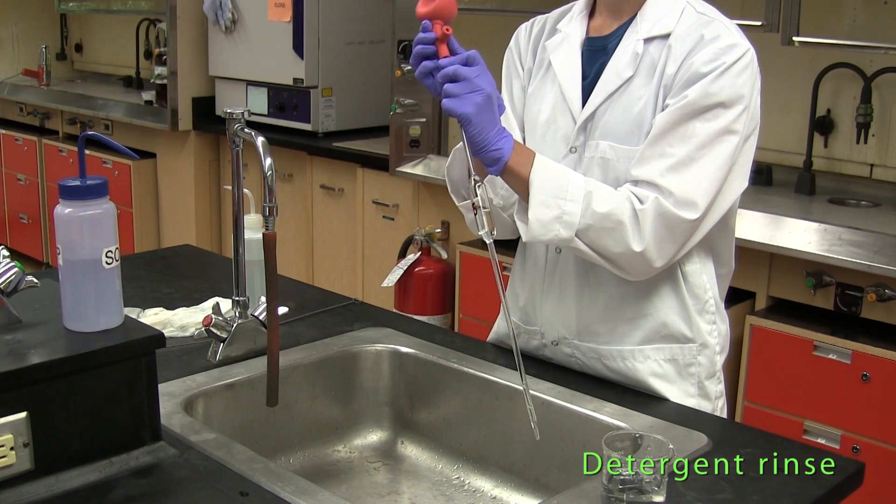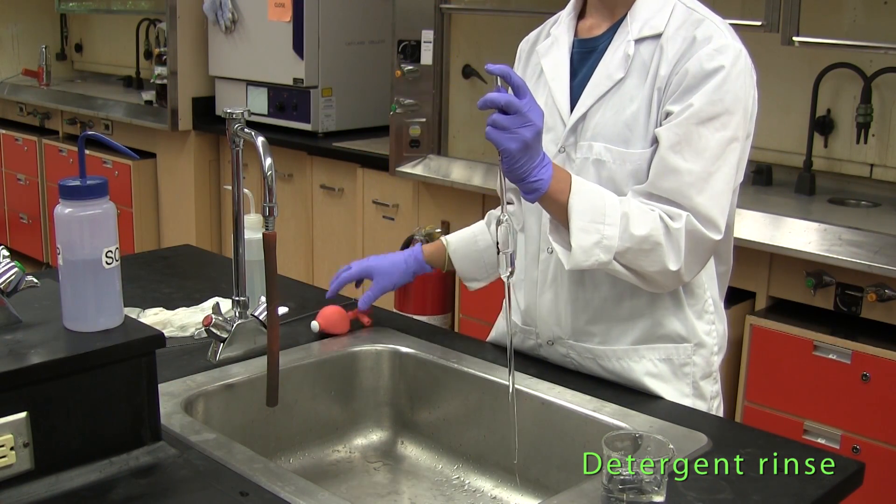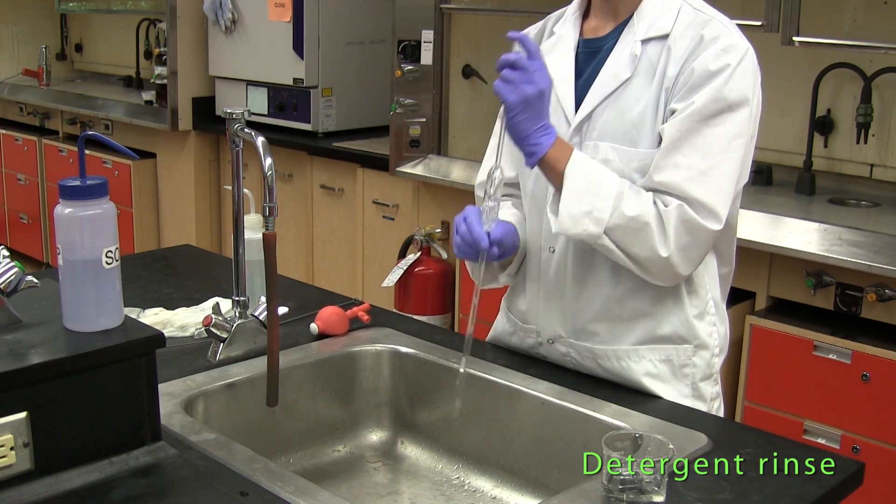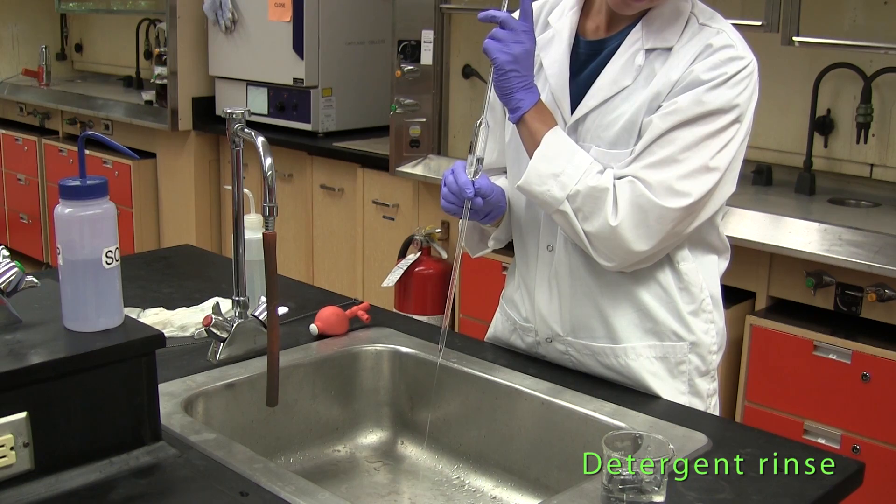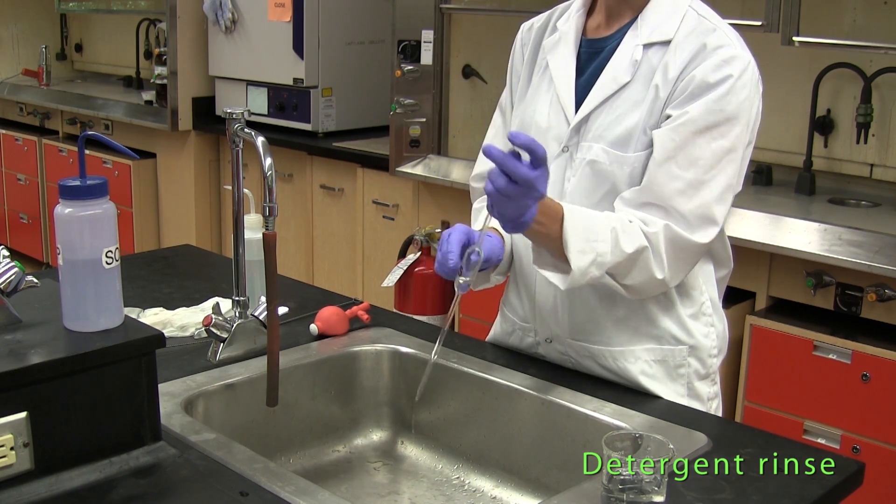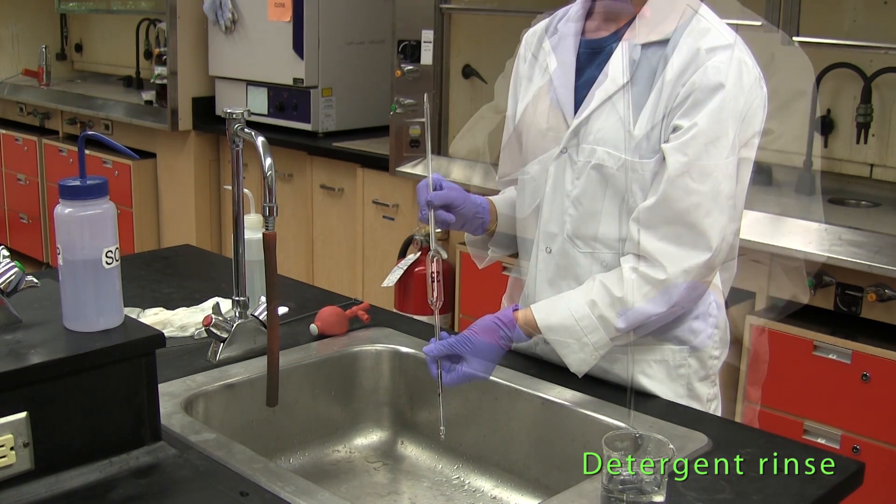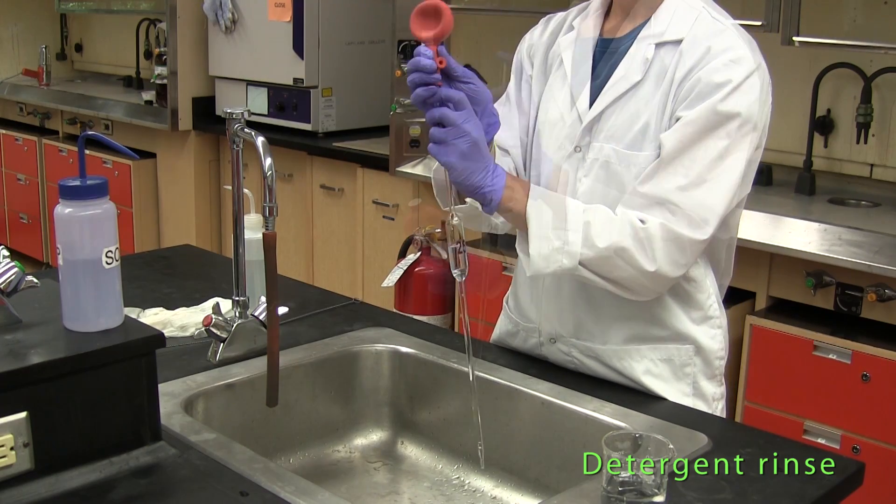The pipette filler is removed and an index finger is placed on the upper end of the pipette to prevent the liquid from running out. The pipette is shaken several times and the detergent solution is discarded. The procedure is repeated once or twice.